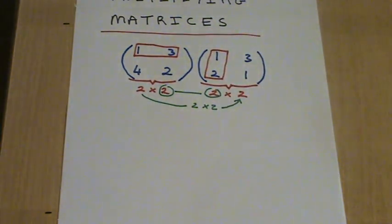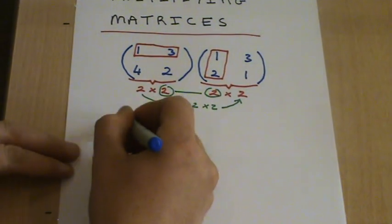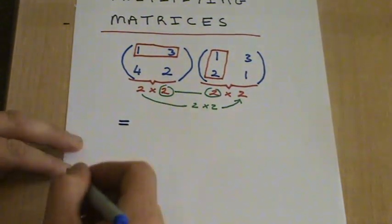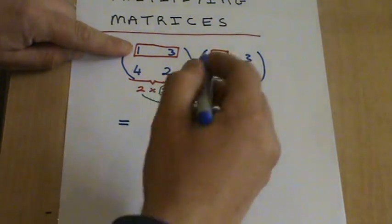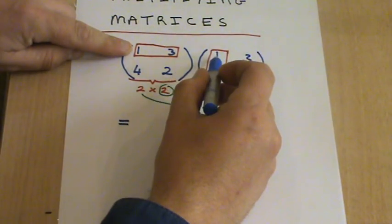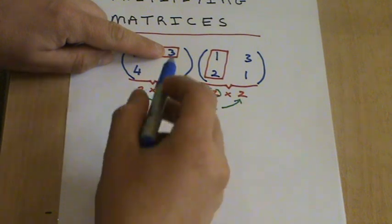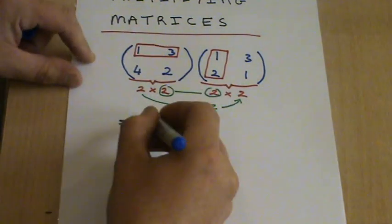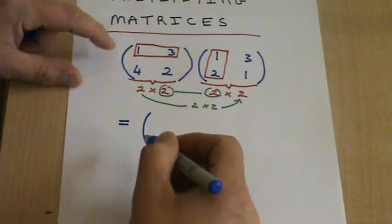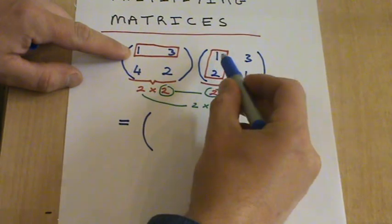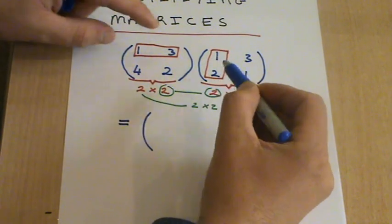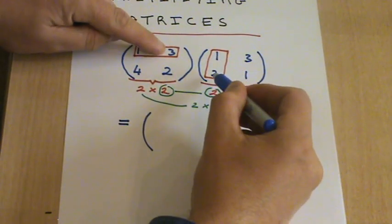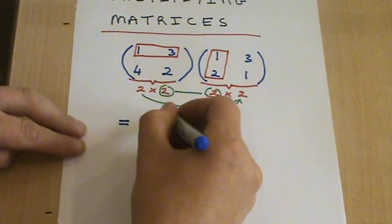When you're multiplying these together, you multiply the number on the top left by this number on the top, and this number on the right by this number on the bottom. So 1 by 1 is 1, plus 3 by 2 is 6, and that gives you 7.